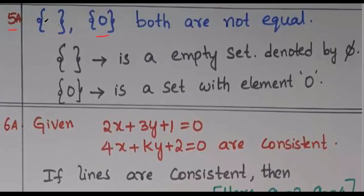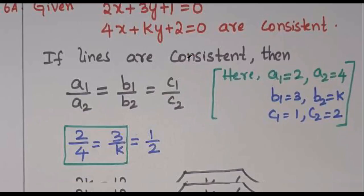Question 5: Empty set and the set containing 0 — are they equal or not? They are not equal because the empty set, denoted by phi, has no elements, while the set {0} has one element, which is 0. So both are not equal.